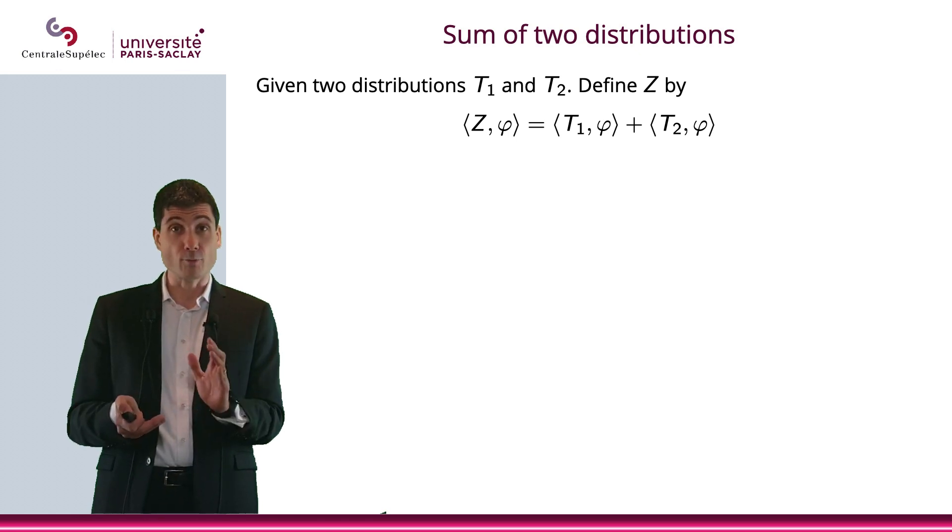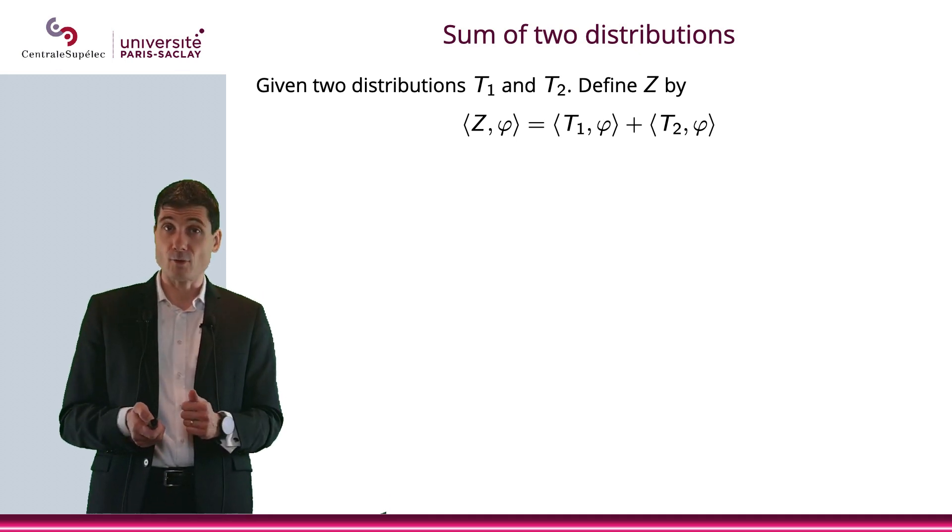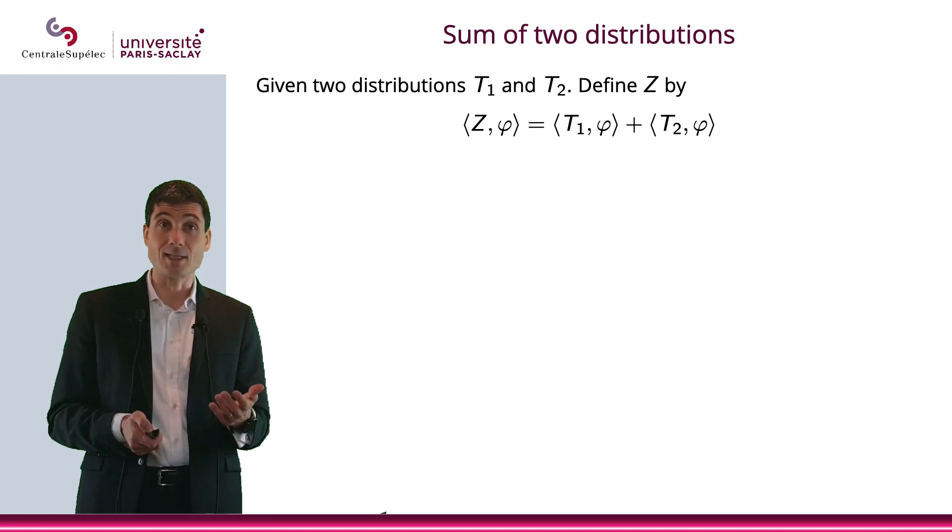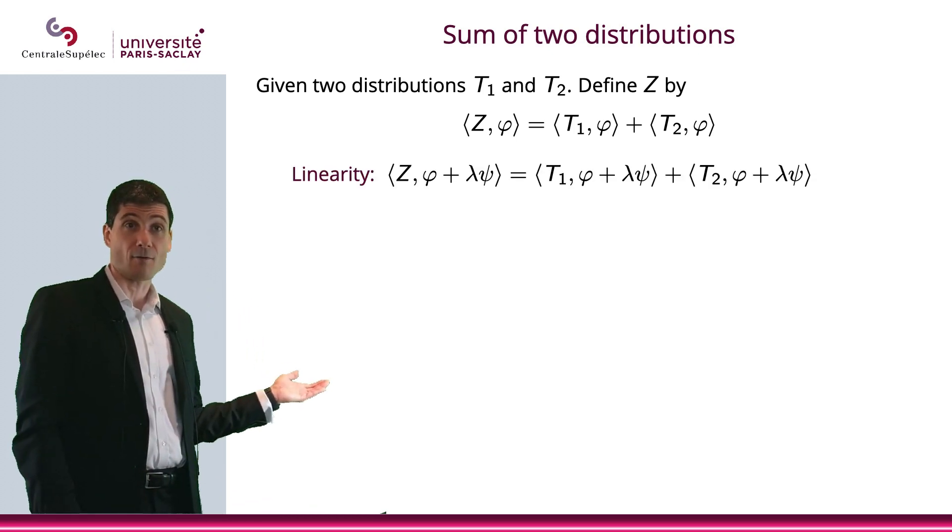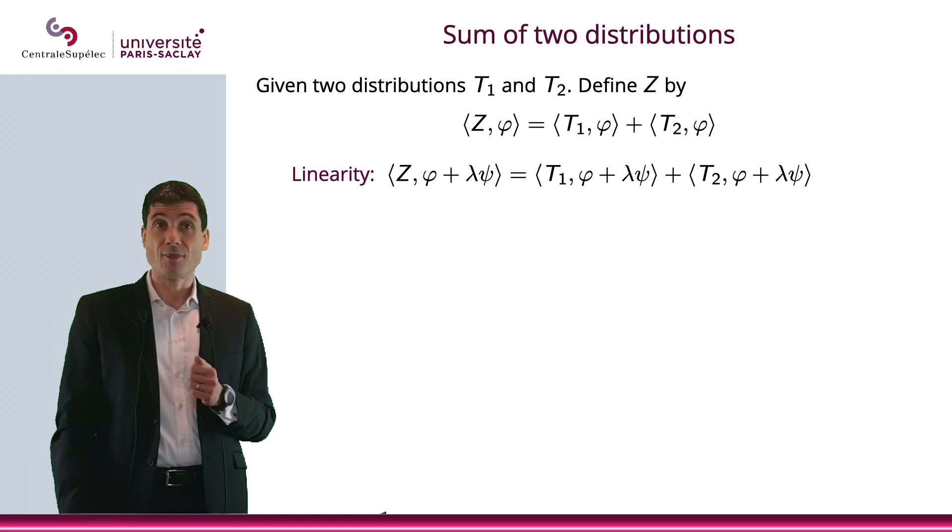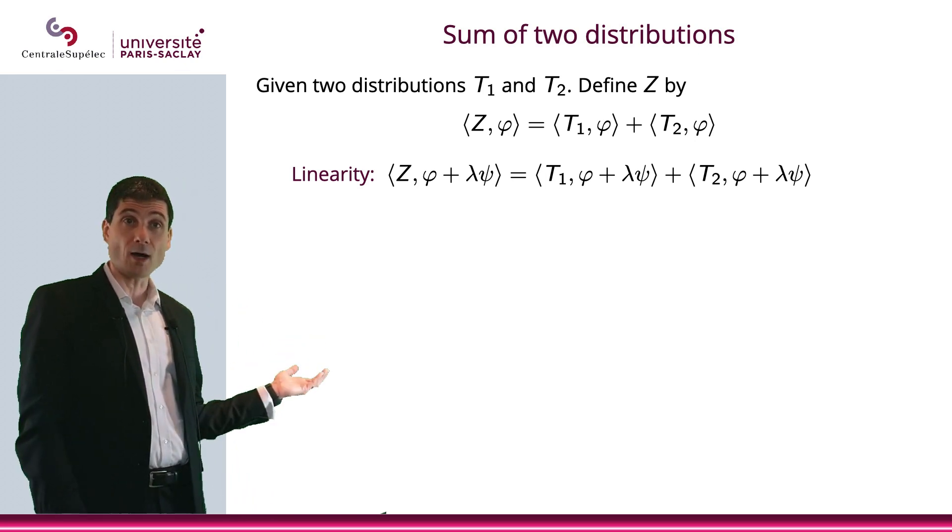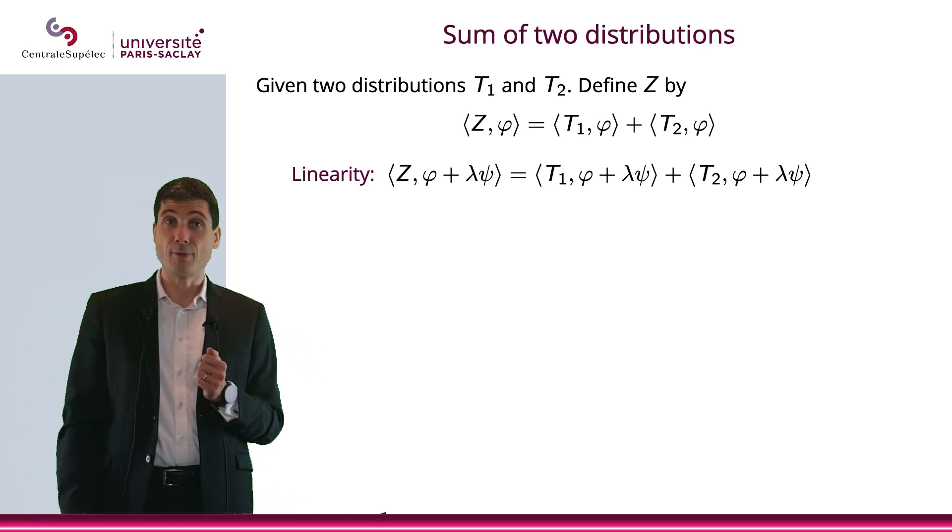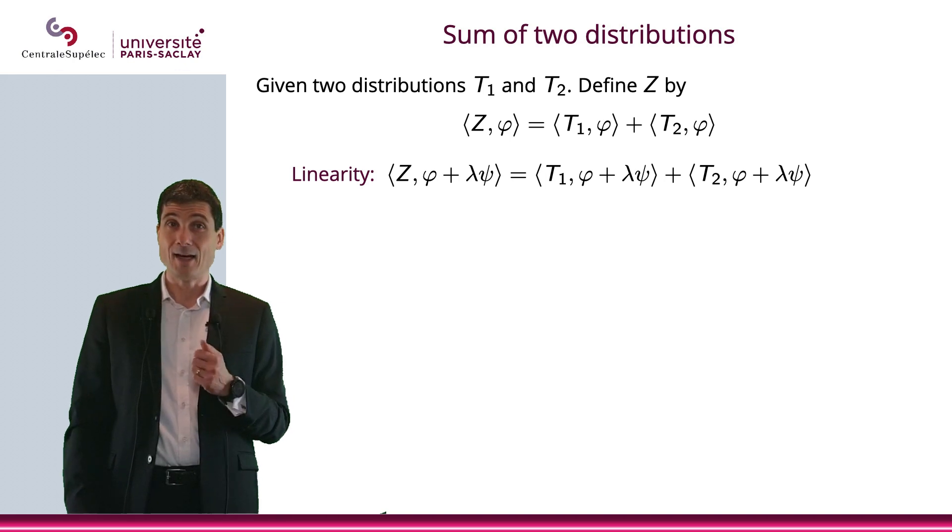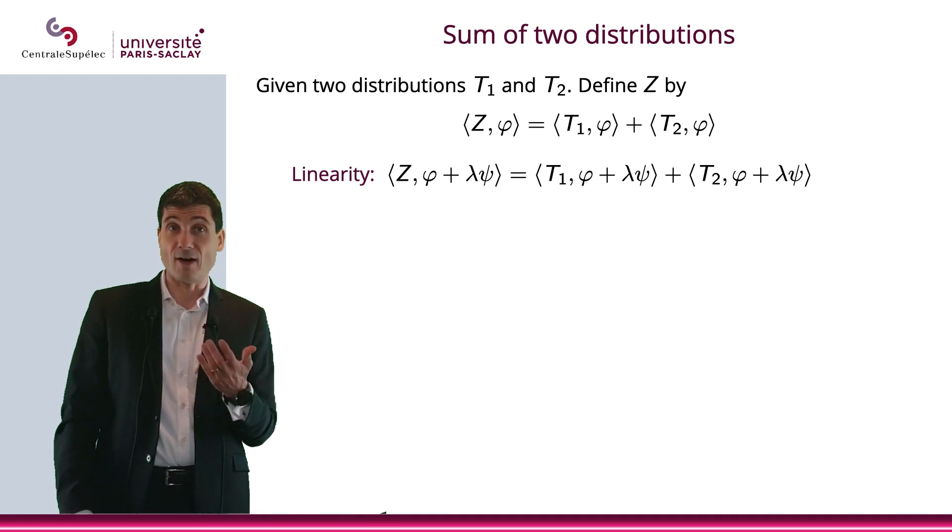What I would like to do is to prove that Z is a distribution. So let me prove that it is linear. First, consider Z of φ plus λψ. That will be, by definition, T1 applied to φ plus λψ, and plus T2 applied to φ plus λψ.